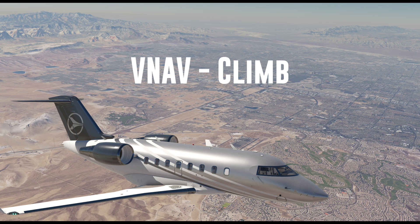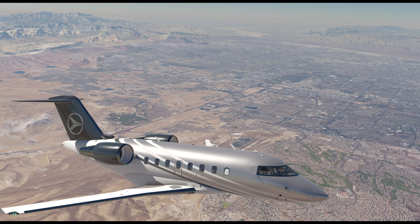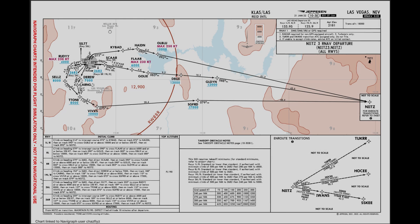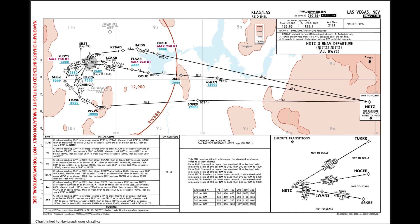VNAV is not limited to just descent in the Challenger 650. We can also use it during climb on departures that have multiple climbing constraints, specifically waypoints that have at or below constraints. We will depart Las Vegas McCarran airport from runway 26 Right on the NITS 3 RNAV departure. It has multiple constraints after takeoff, and the one we will focus on is CELLS at or below 8,000. However, we do have an initial speed restriction of 230 knots at RUDY to keep an eye on.